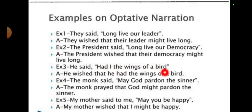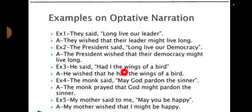'He said, had I the wings of a bird' — this is a wishful thinking sentence. Don't consider it an interrogative sentence just because the auxiliary verb appears first. This is a wishful sentence describing something that cannot be actualized in real life. So we write it as an optative sentence: 'He wished that he had the wings of a bird.' Notice the tense is not changed again since it is already in past form.